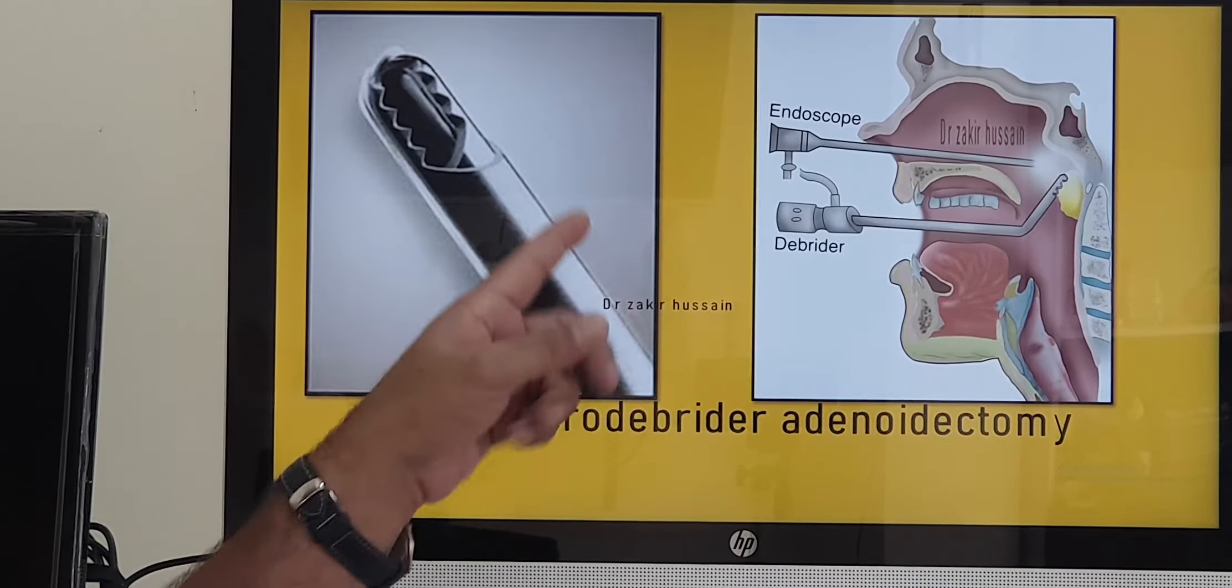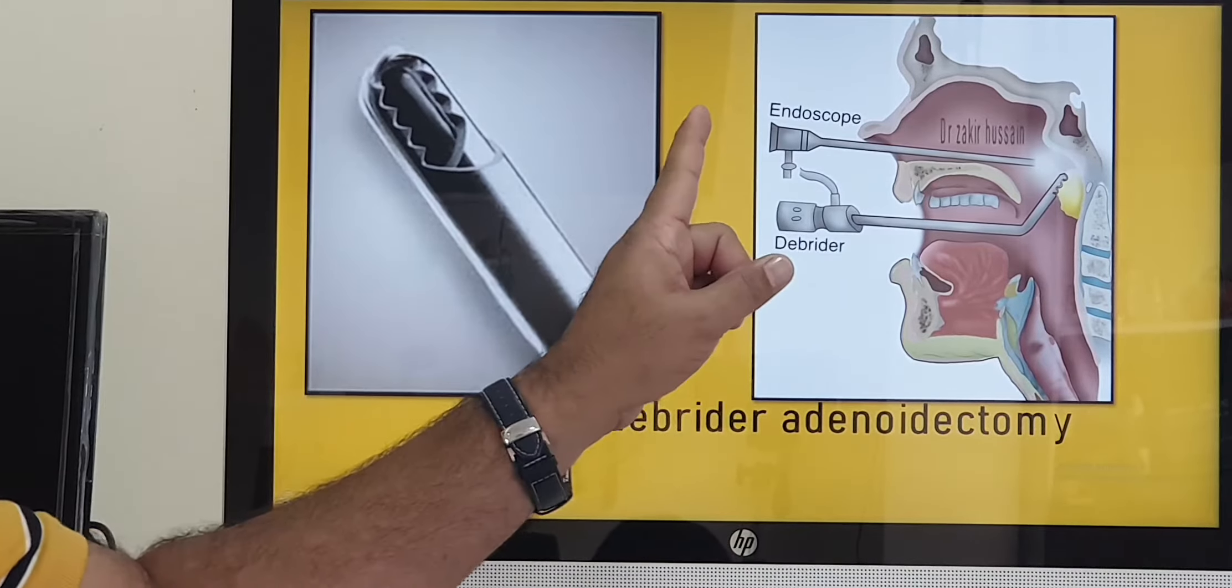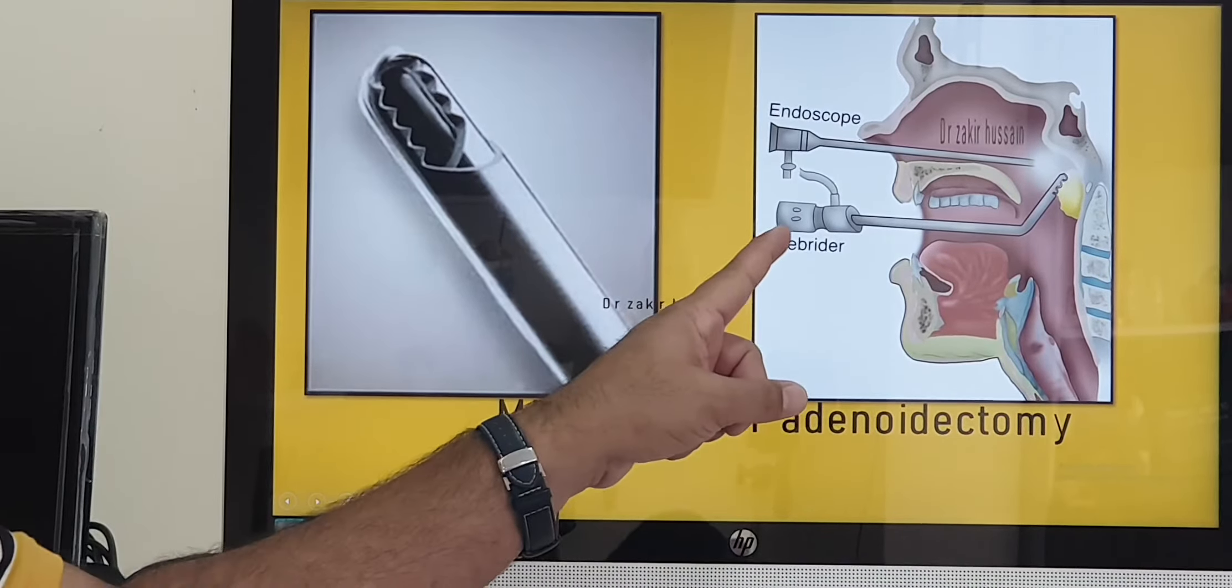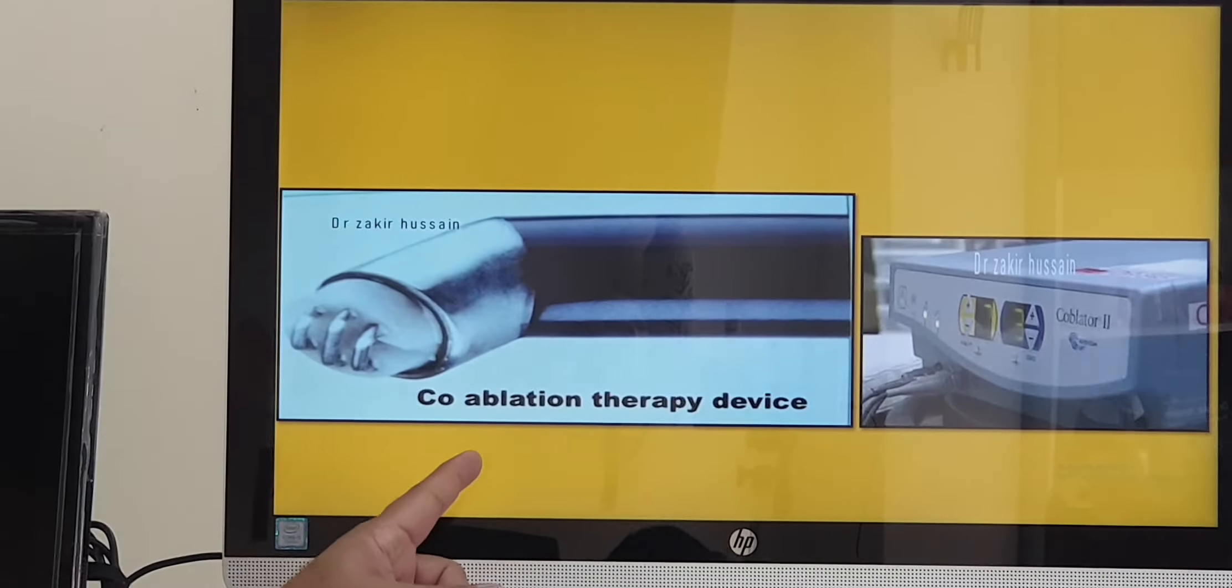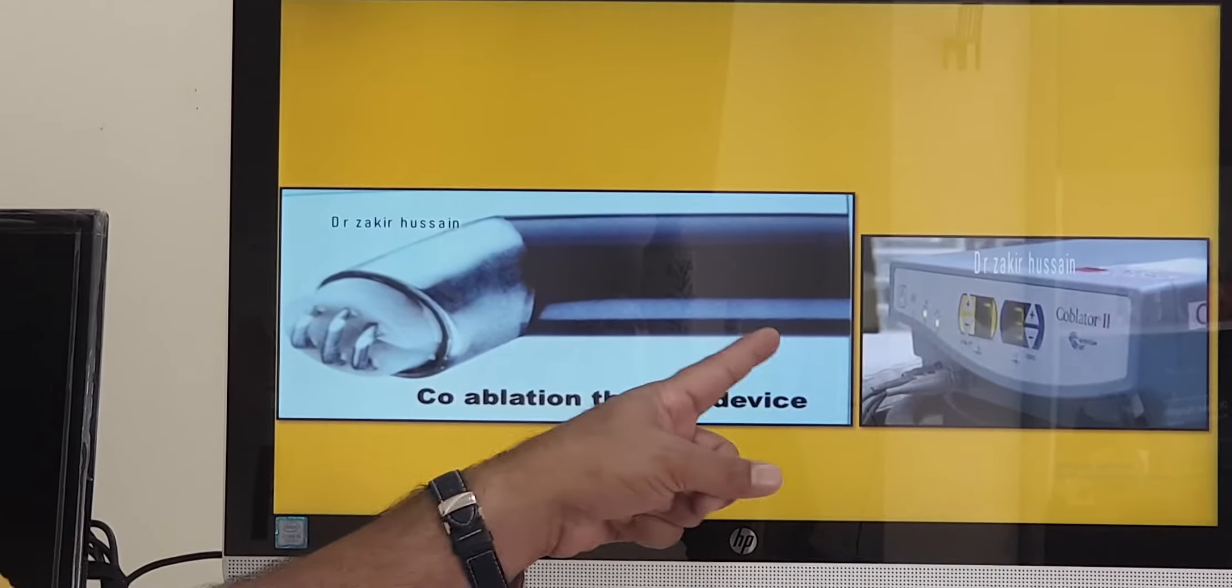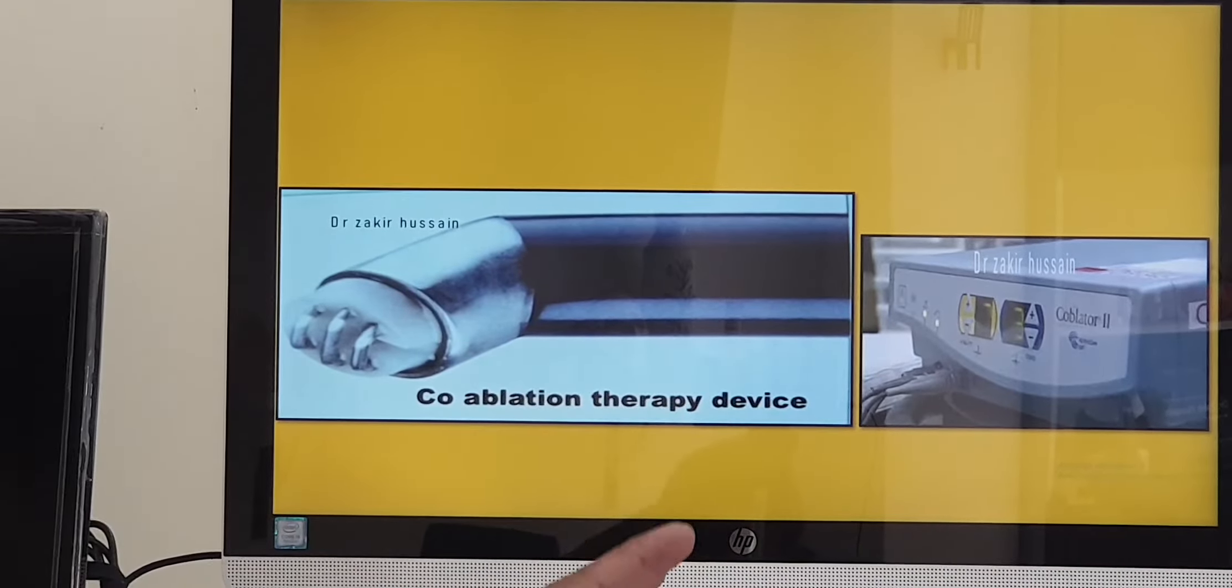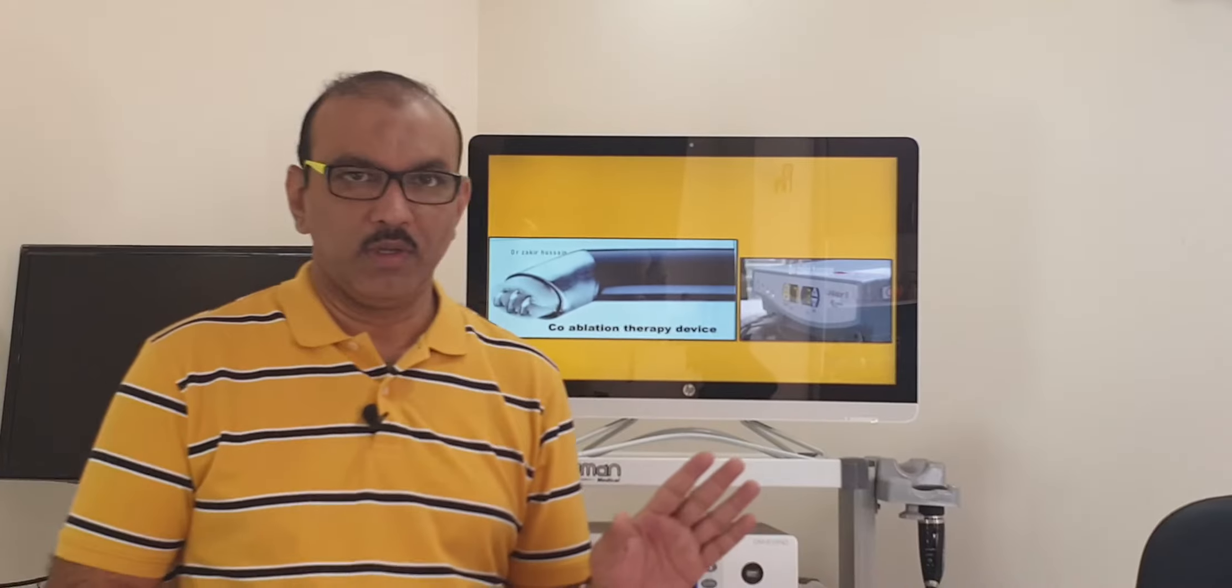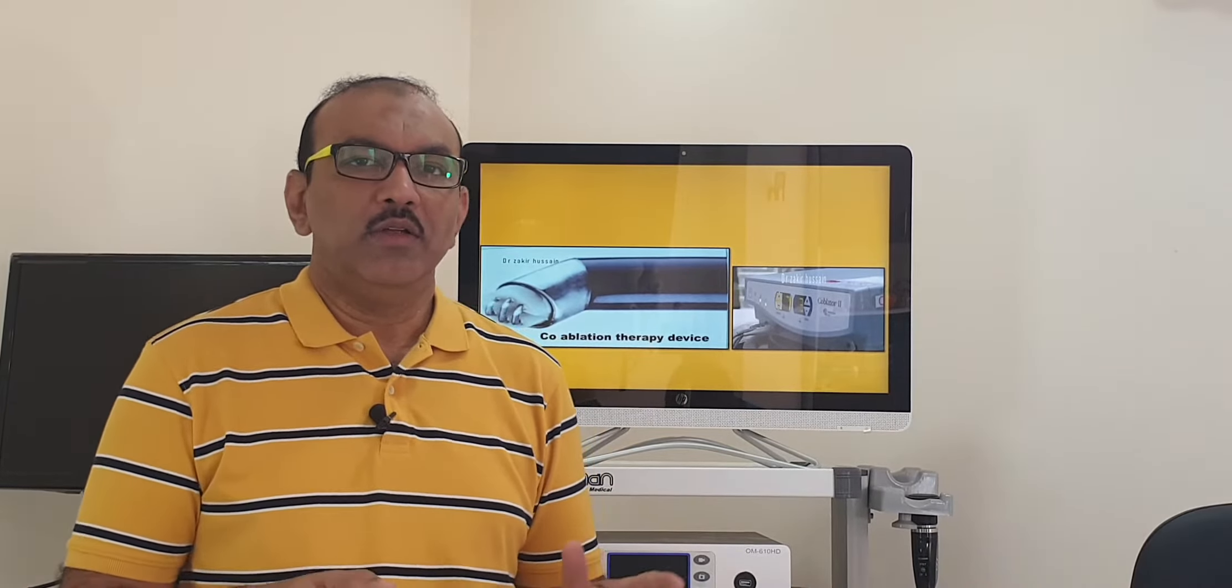The fourth technique: the whole setup is the same, endoscope and the way you introduce everything, except we replace the debrider with the coblator. Here, the coblator, this is the wand, this is the machine. This is the latest technology now. This is what I am using now. Most of the hospitals are using this technique.